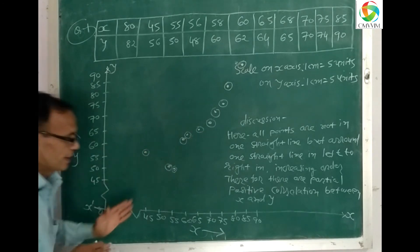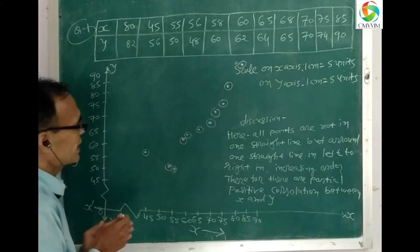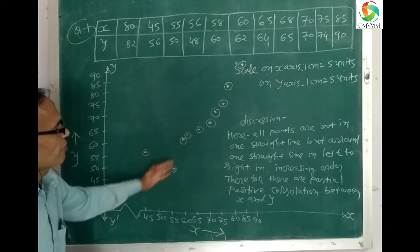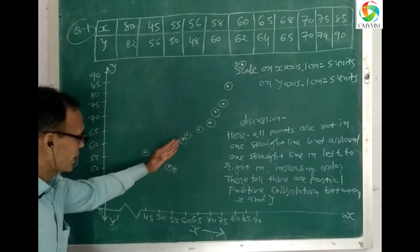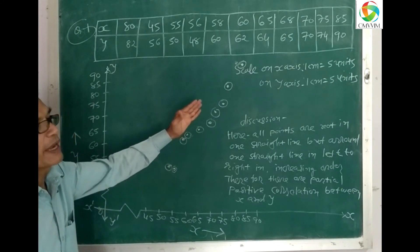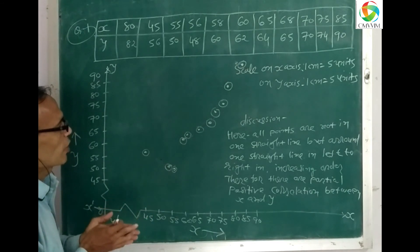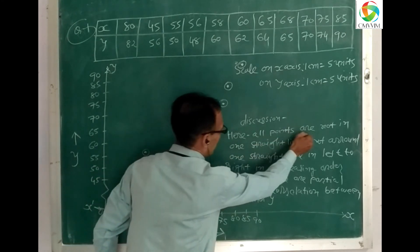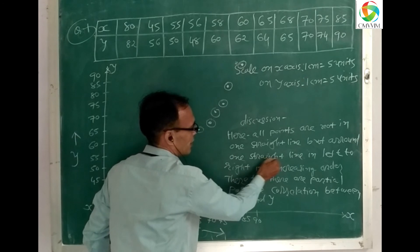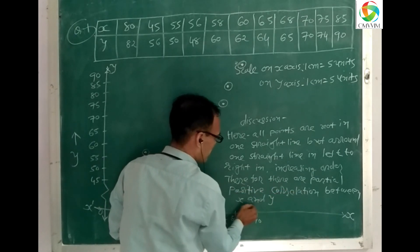Points go from left to right in increasing order, which means partial positive correlation. All points are not on one straight line but are around one straight line, going left to right in increasing order. Therefore, there is partial positive correlation between x and y.